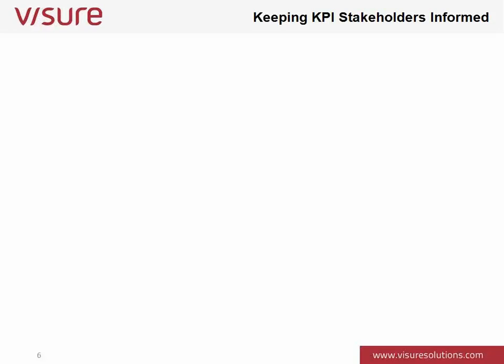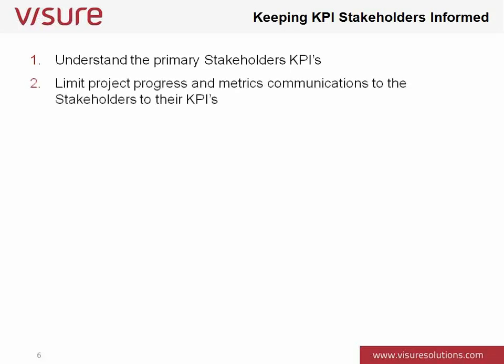Moving on, let's look at keeping our KPIs — or key performance indicators — and stakeholders informed. It's really important that we talk to the primary stakeholders and communicate back to them the progress we're making against the requirements that they contributed. We need to limit the project progress and metrics communications to the stakeholders' KPIs and to the requirements that they contributed.